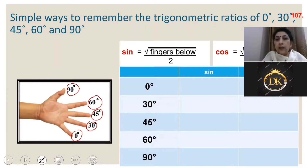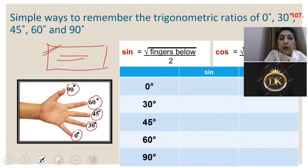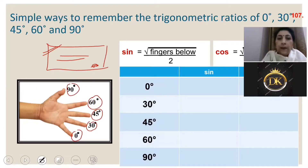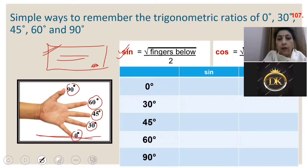Once we have this, the next thing to be done — if you remember a cheque, you sign below, not on top. Keep that hint in mind: for sine, you will take the square root of fingers below upon 2. For sine 0 — how many fingers are below? Zero. So sine 0 = √0/2 = 0.